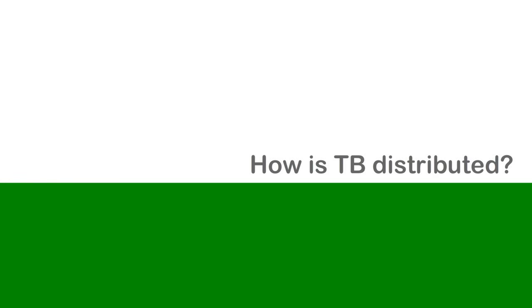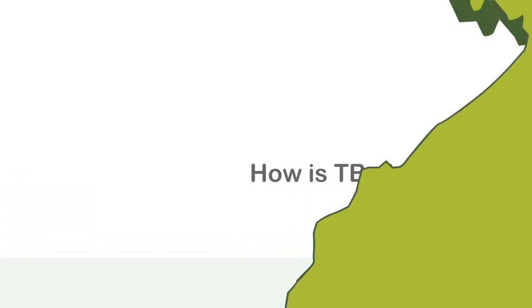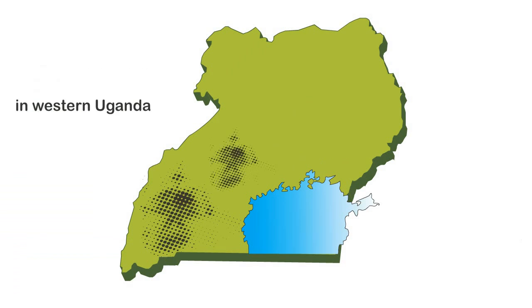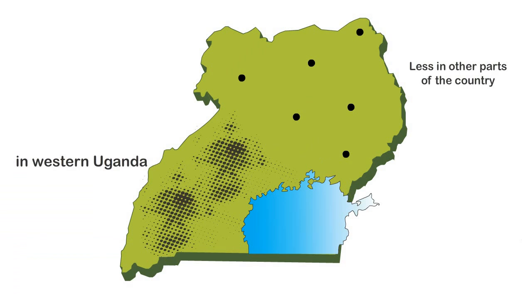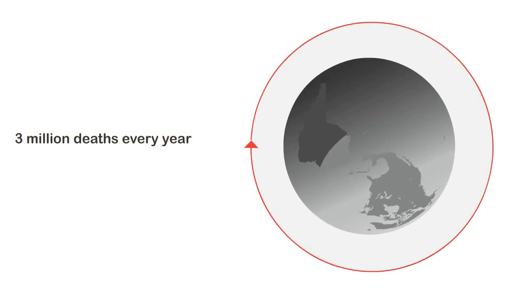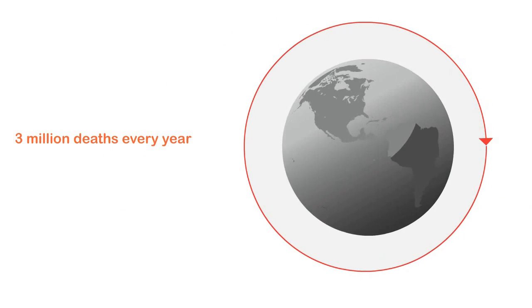How is tuberculosis distributed? In Uganda, tuberculosis is more common in Western Uganda and less common in other parts of the country. However, worldwide, tuberculosis kills 60% of the infected people who are not treated. This amounts to 3 million deaths every year.